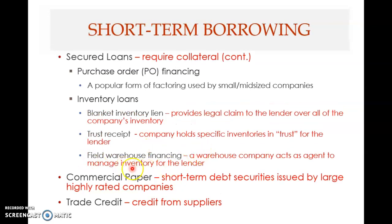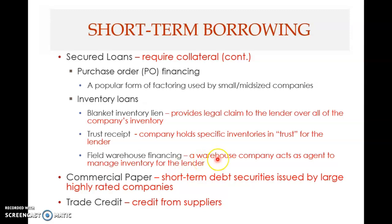There are three entities involved in field warehouse financing. The first entity is the borrower — the company that borrows. The second is the lender that lends the money. The borrower pledges inventory to the lender, but rather than holding it via a trust receipt or a blanket lien, the lender engages a warehouse — a third entity — to manage the inventory. Once the inventory is sold, the proceeds are used to pay the lender.